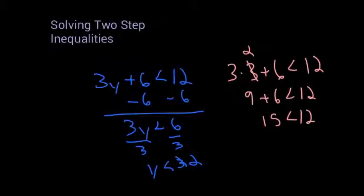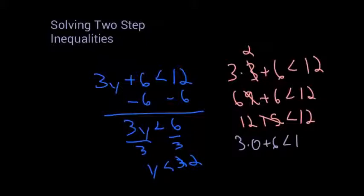So y has to be less than 2. If I use 2 it's going to be equal, but let's check. 3 times 2 is 6, and 6 plus 6 is 12 — well 12 isn't less than 12, it equals 12. So if I put any number less than 2 in there I get the correct answer. Let's use 0: 3 times 0 plus 6 is less than 12. 3 times 0 is 0, plus 6 is less than 12, and 6 is less than 12 — that is a true statement.